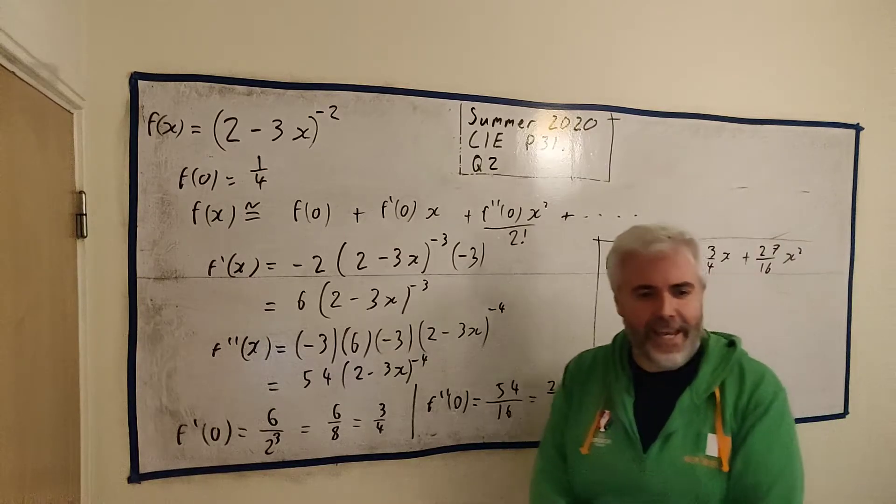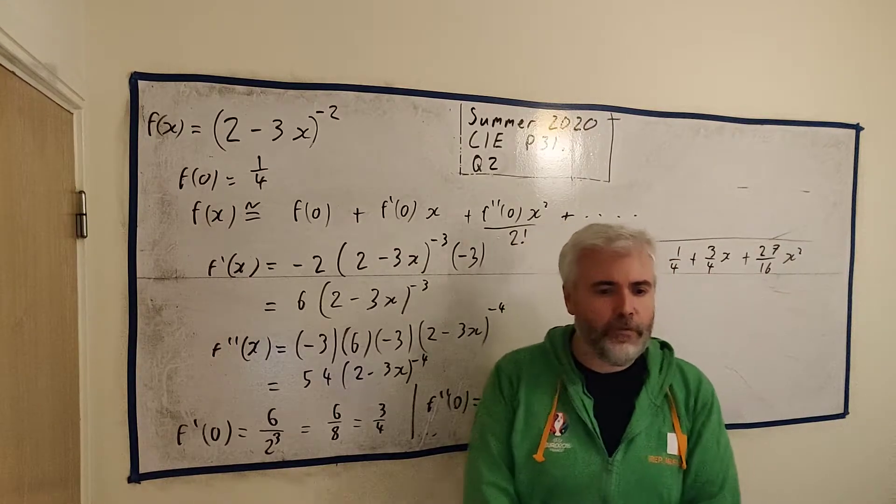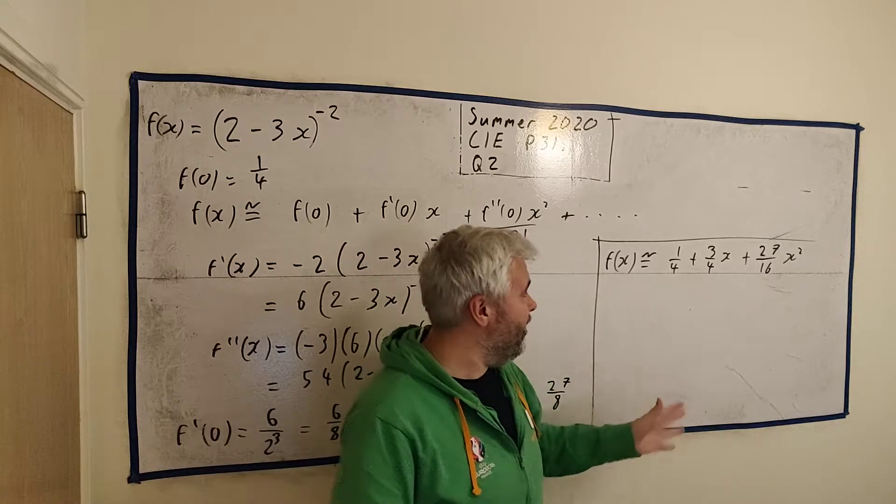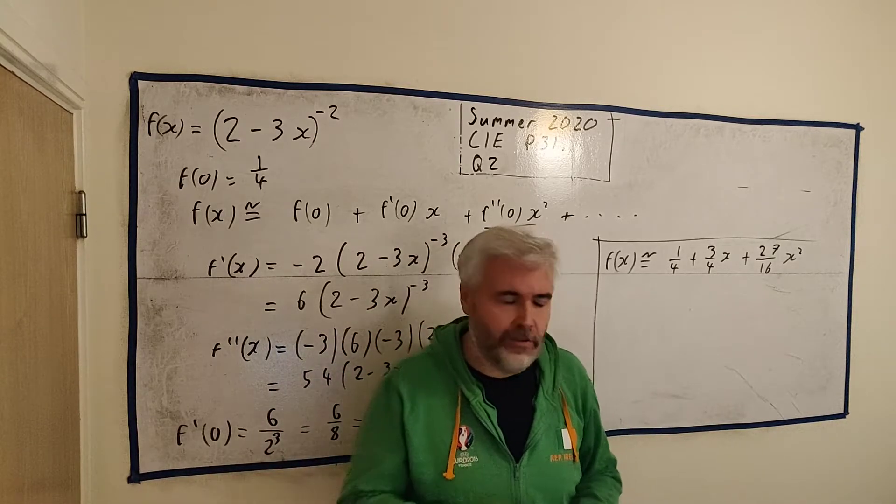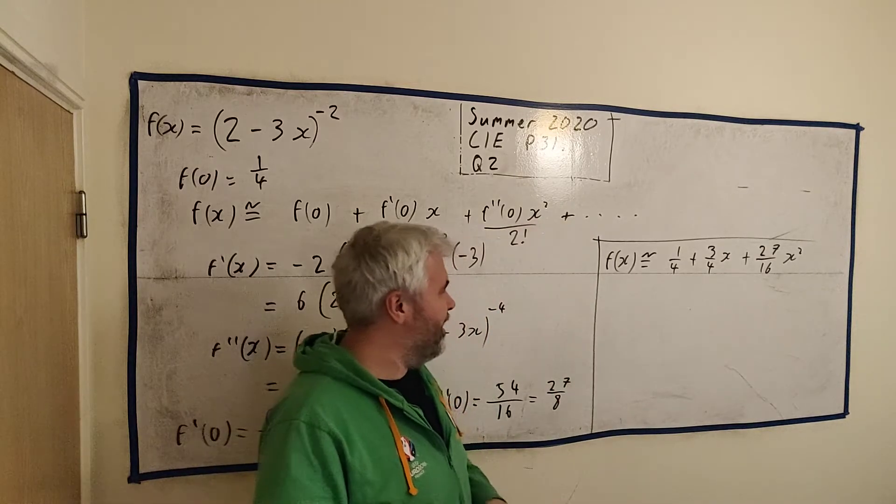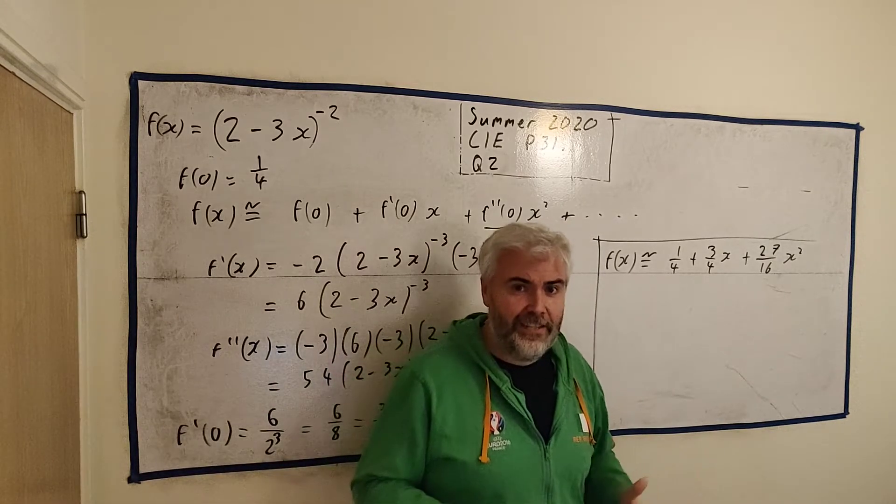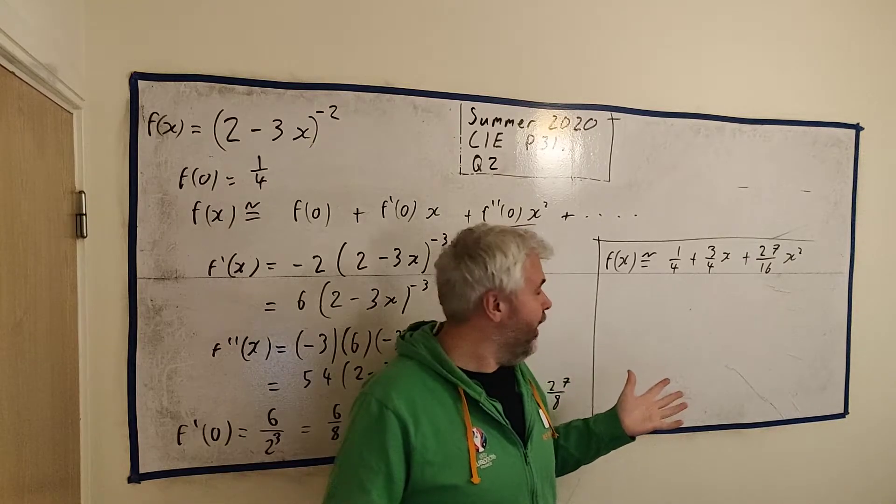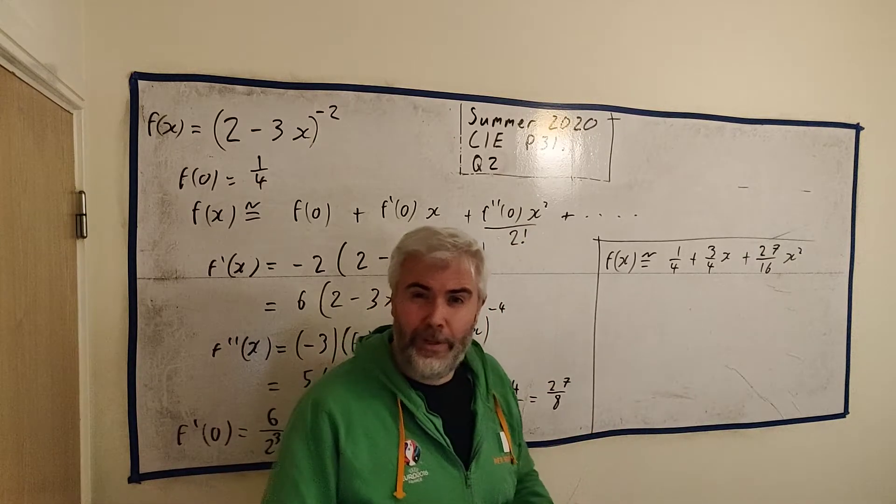For part B, then they say, state the set of values of x for which the expression is valid. Now, it's only one mark for this question. So it's actually quite easy to answer. But it's really complicated to explain. So I'm going to have to leave that for a more general video on it. I'll just try and sum it up in a couple of minutes, though.